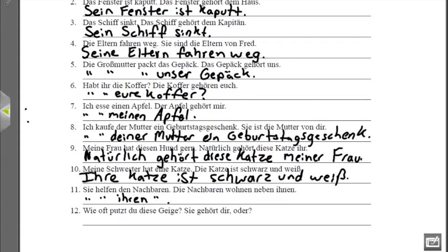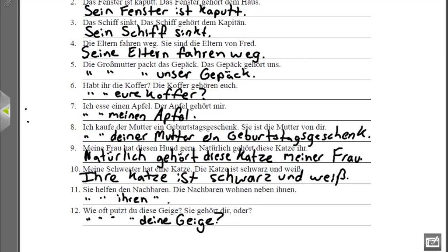Nummer zwölf: 'Wie oft putzt du diese Geige?' — how often do you clean this violin? 'Sie gehört dir, oder?' — it belongs to you, doesn't it? We want to say how often do you clean your violin. 'Wie oft putzt du deine Geige?' Deine has an -e at the end because Geige is feminine. How often do you clean your violin?